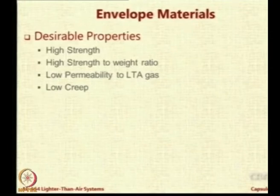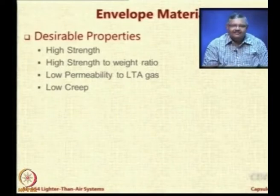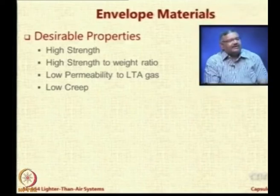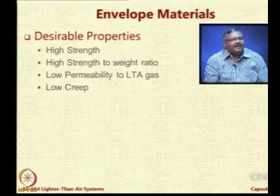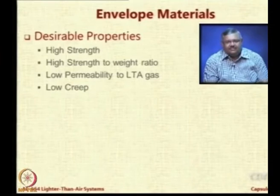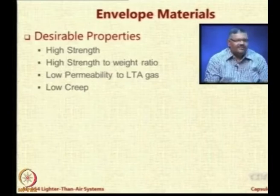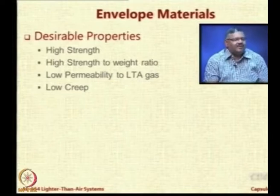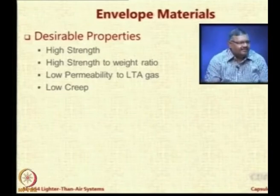The next required property is creep resistance — it should be high and the material should be able to withstand creep. Creep is the failure of a material due to prolonged exposure to loading. In an LTA system deployed for weeks or months, a fabric that can take a lot of load for a short time may start deforming much faster after one month of continuous loading. We want a material to have very low creep propagation, or very high creep resistance.